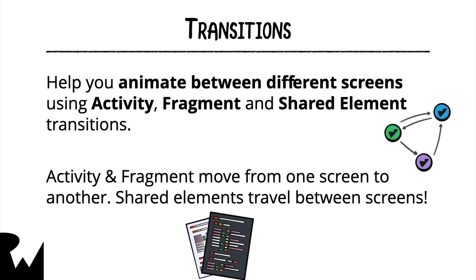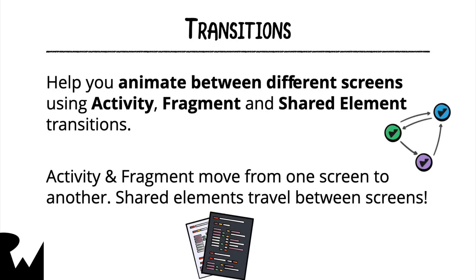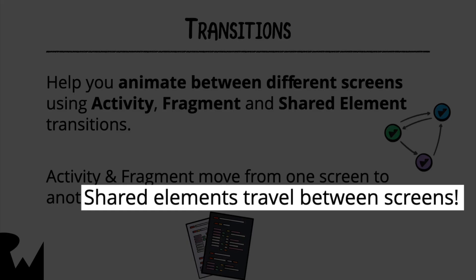If you want to animate the transition between different screens in your app, you use activity, fragment, and shared element transitions. Activity and fragment transitions are used to move from one screen to another — most common examples are fade in or out transitions and slide transitions. Shared element transitions are a bit different, as they let you move elements from one screen to another, which is why they are called shared element transitions.